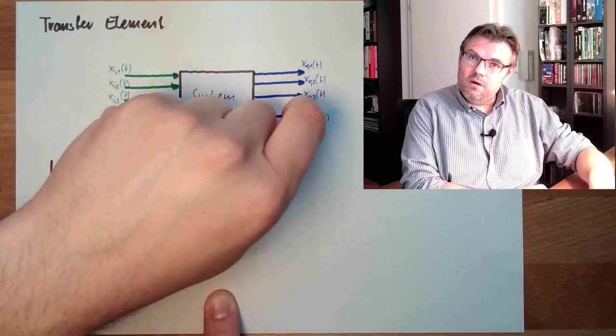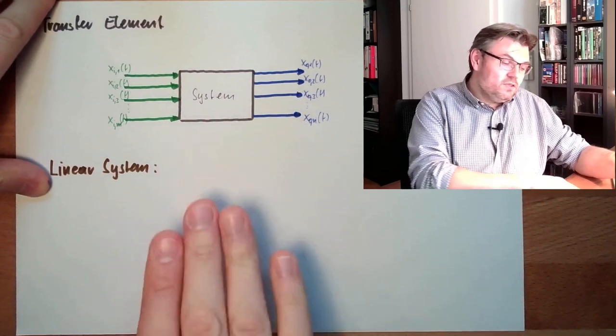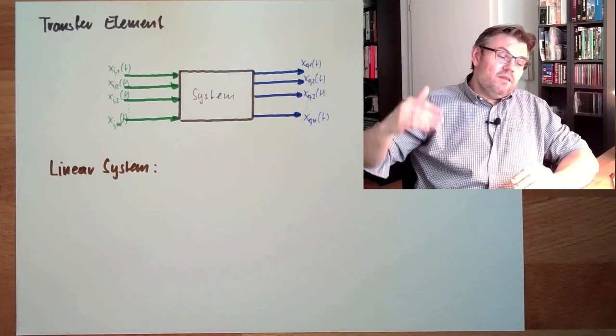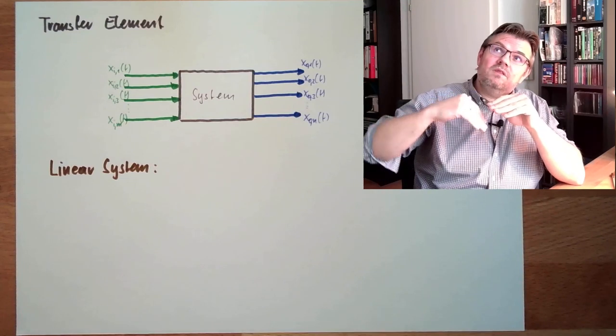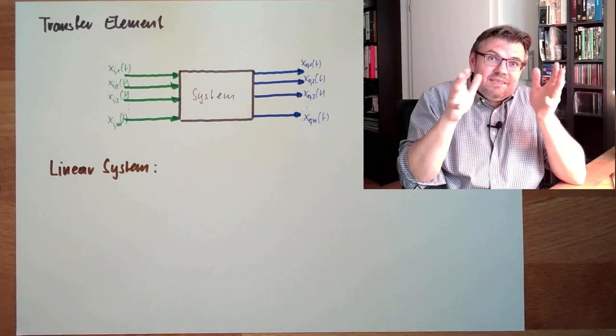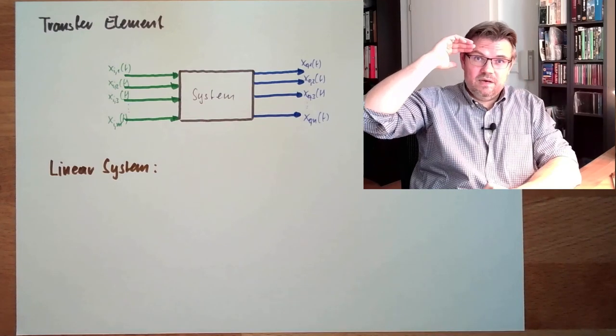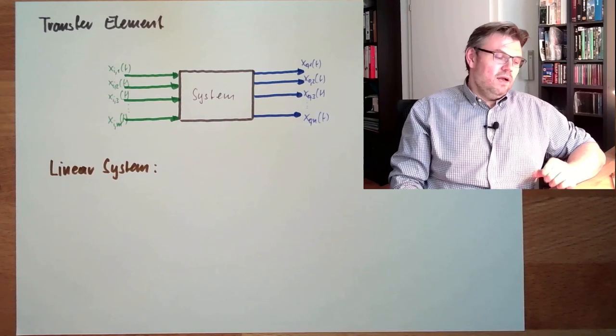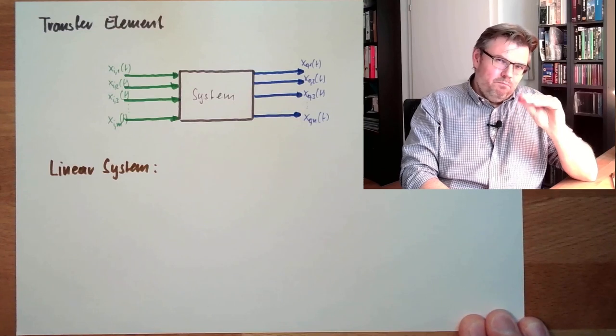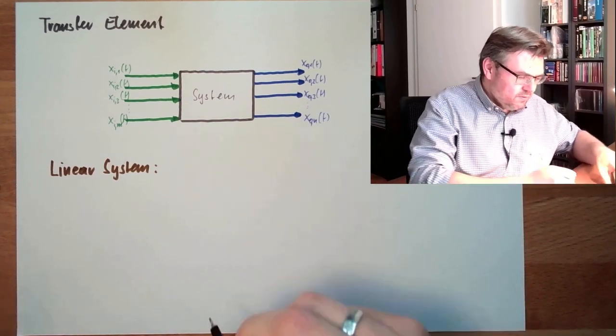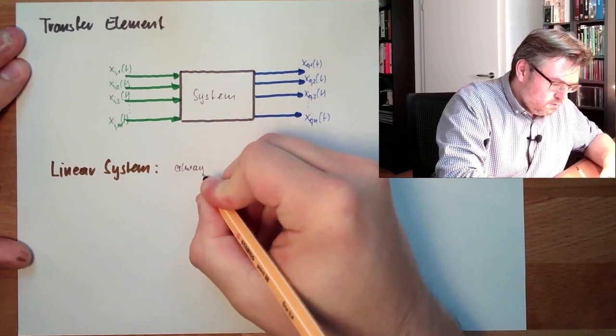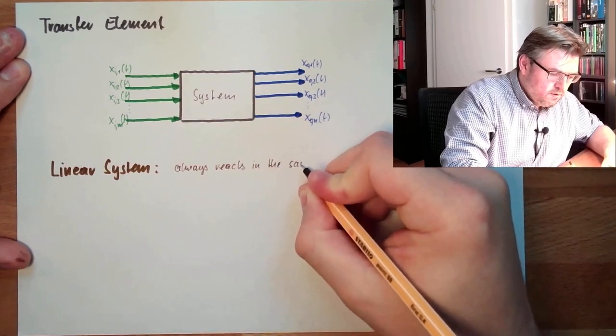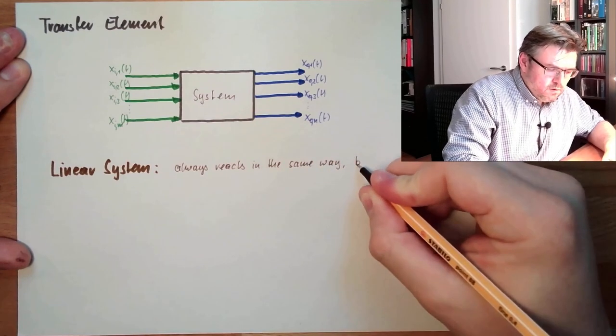Double input, double output, triple input, triple output, and so on. So, the system actually is reacting always the same way. If the input is jumping to one position, then the output is doing its stuff. If the input is jumping to double the size, the output is looking exactly the same, but scaled. Also doubled in size. But from time and so on, everything looks the same. So, this is a linear system. A linear system always reacts in the same way, but scaled.